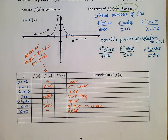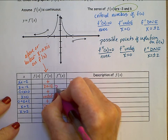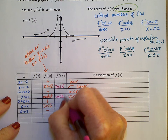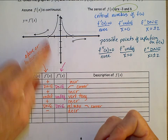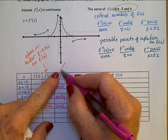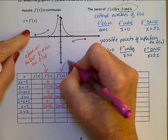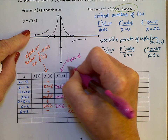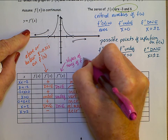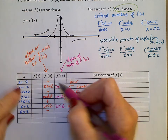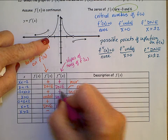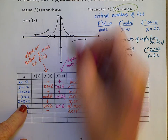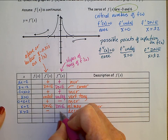Now let's look at f double prime. To read f double prime from an f prime graph, we look at slopes of tangents. When x is less than negative 2, slopes are positive. Between negative 2 and 0, positive. For x between 0 and 2, slopes are negative. And for x greater than 2, slopes are positive.